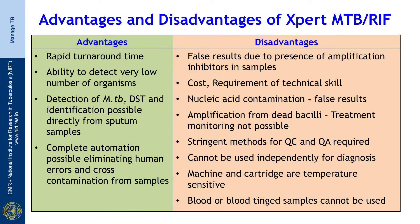The advantages of the Expert MTB-RIF assay include: rapid turnaround time with results available in about 90 minutes; the ability to detect very low numbers of organisms; detection of Mycobacterium tuberculosis complex, drug susceptibility testing for at least rifampicin, and organism identification directly from sputum samples; and complete automation, which eliminates human errors and cross-contamination.